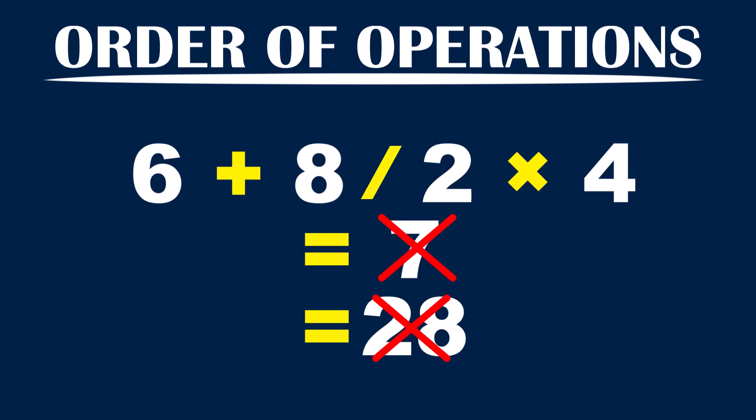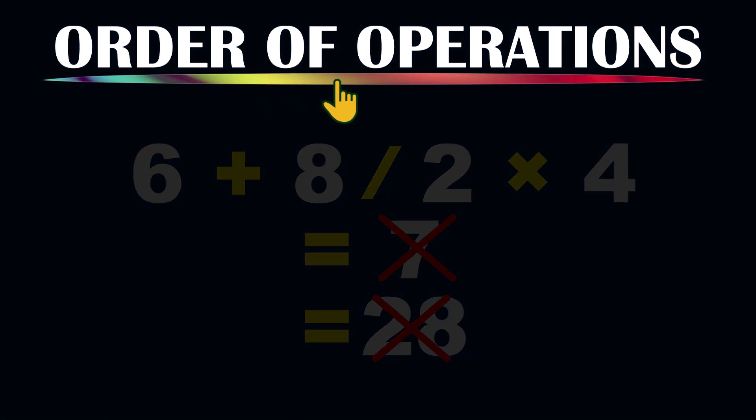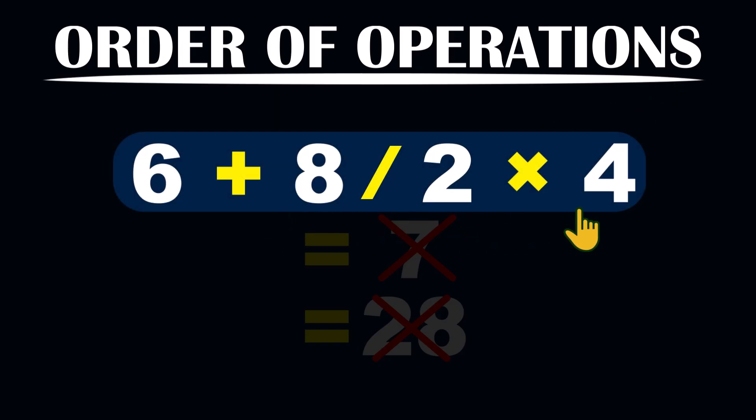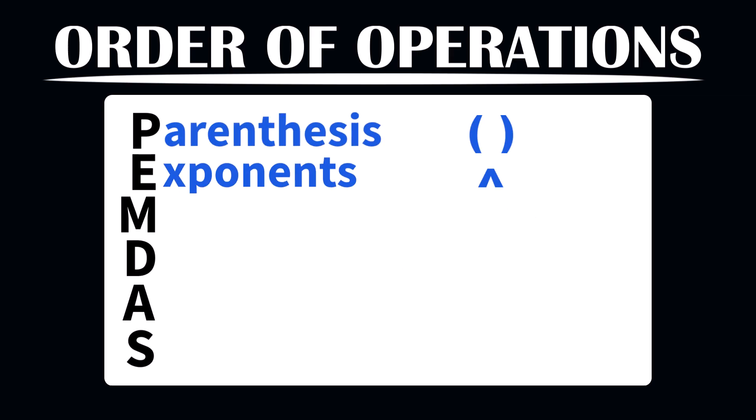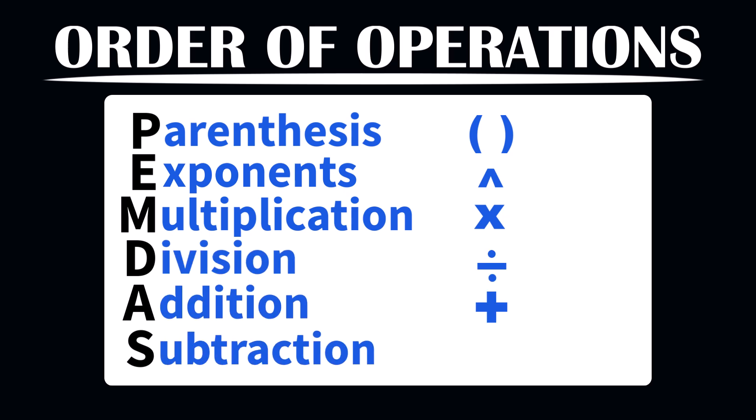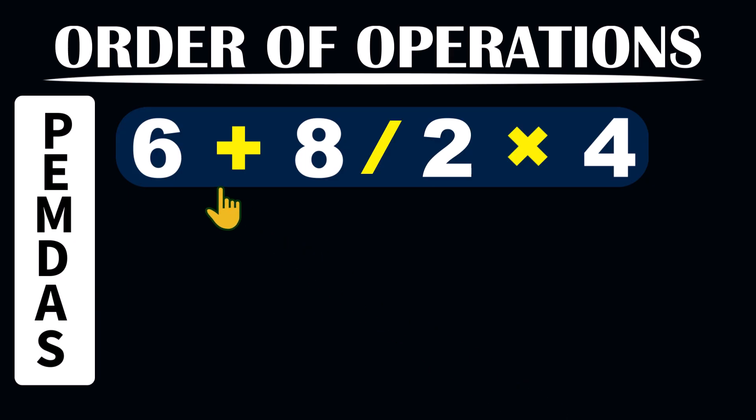That is where the math rule, known as order of operations, comes in. The order of operations rule is a strict math rule specifying what order or sequence we must follow when performing mathematical operations like this one here. You may be familiar with the acronym PEMDAS, which stands for parenthesis, exponents, multiplication, division, addition, and subtraction. That is the order or sequence we must follow to do calculations on mathematical expressions like this one.